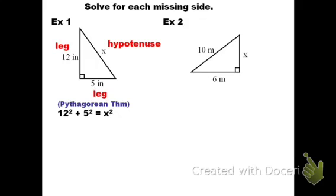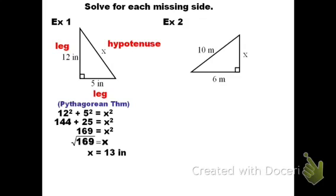In this class, we're going to justify any time we use the Pythagorean Theorem by writing 'Pythagorean Theorem' next to the problem. To solve for x, we square the terms: 12 squared is 144, 5 squared is 25. Combining like terms, we get 169 equals x squared. Taking the square root of both sides, x equals the square root of 169, which is a perfect square — so x equals 13. Make sure you include units: the legs were in inches, so the hypotenuse is also in inches. Therefore, x equals 13 inches.